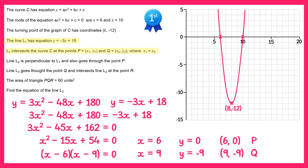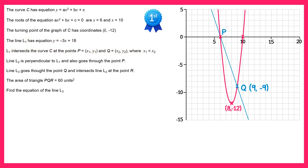So we can mark those onto the diagram. Point (6, 0) is already marked — it was one of our roots — so we can call that P. Point Q is a new point at (9, negative 9), so let's mark that on. If we join these up we get the line L1.